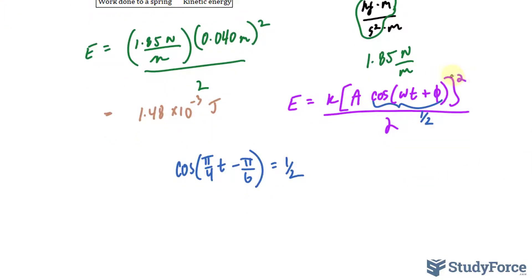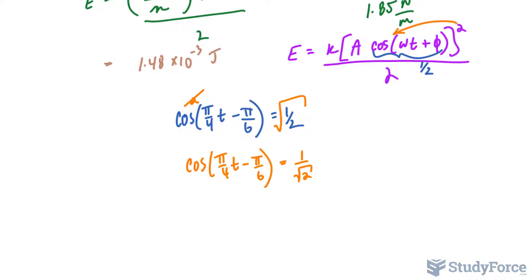Before we solve for t here, remember that this is being squared, so I'll put a power of 2 there. And to get to t, we have to square both sides. That will get rid of this power of 2. And the square root of this is 1 over the square root of 2. Just distribute the square root to the numerator and to the denominator.